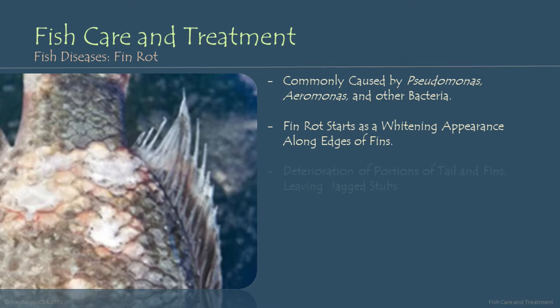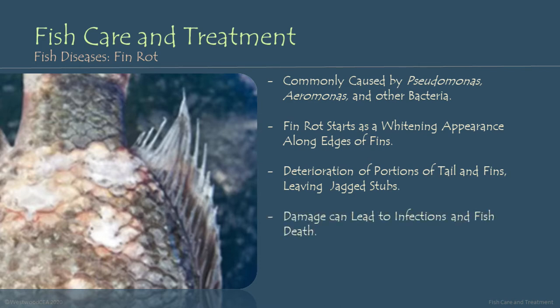As fin rot progresses, it can lead to a deterioration of the soft tissue portions of the tail and fins, and it leaves behind a jagged look to the fins, as you can see in the picture on the left-hand side. Aggressive damage to the tails and fins can lead to secondary infections, such as bacterial or fungal infections, and can ultimately lead to fish death. If a fin rot infection progresses to the point where the majority of the tail and fins have rotted away, or a harmful secondary infection has started, it can make it very difficult for the fish to swim, eat, and breathe properly, and this can ultimately lead to fish death.